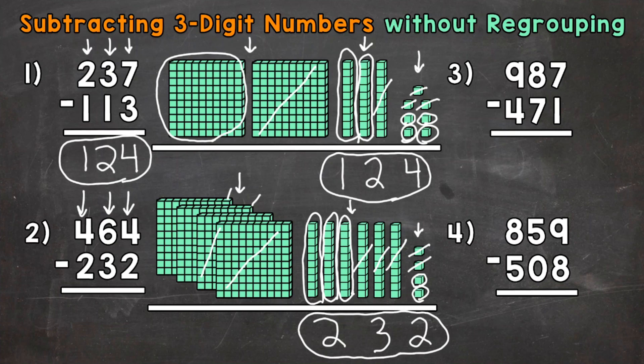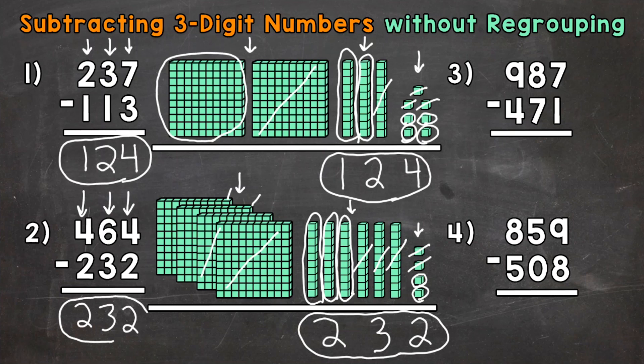Let's solve this to the left as well. Start with the ones: four ones minus two gives us two. Move to the tens where we have six minus three — that gives us a three in the tens. And then lastly, the hundreds: four hundreds minus two hundreds, four minus two, that's going to give us two. So we get 232 over there as well.